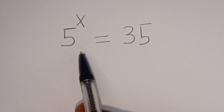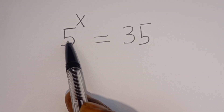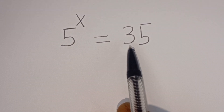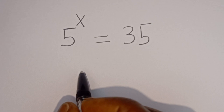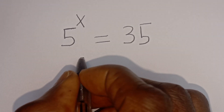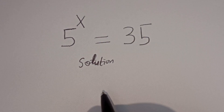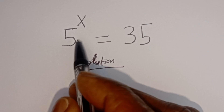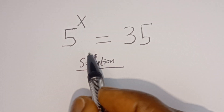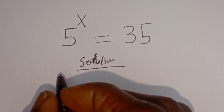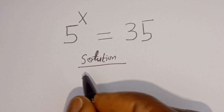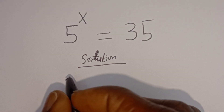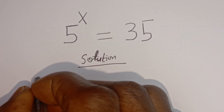Hello. How to solve for X in this equation: 5 to the power of X is equal to 35. Here I'm going to solve this equation in two different ways. Let's consider the first method.